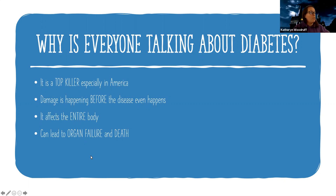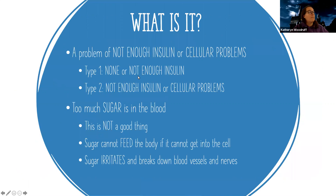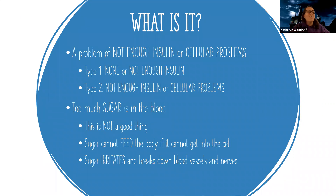So it's very important to understand diabetes because you're going to see this a lot. Diabetes — and there are two types — is a problem of either having not enough insulin, or zero insulin, or it's a cellular problem.